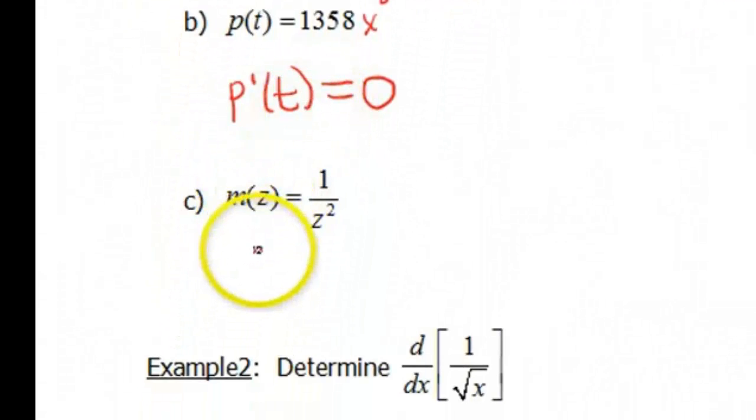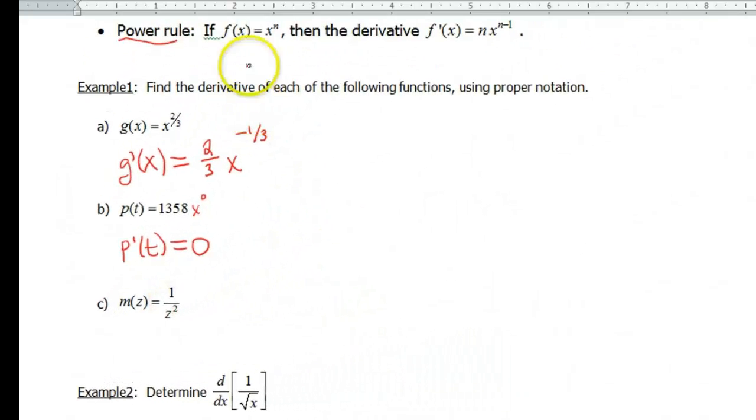Next one in this example is m(z) equals 1 over z to the 2 power, or z squared. For this particular one, we're gonna have to do a little bit of rewriting. Because the power rule says our base has to be the variable and we have to have a number for our exponent. We can't do anything with this 1 over. So we're gonna have to rewrite this as z to the negative 2 power.